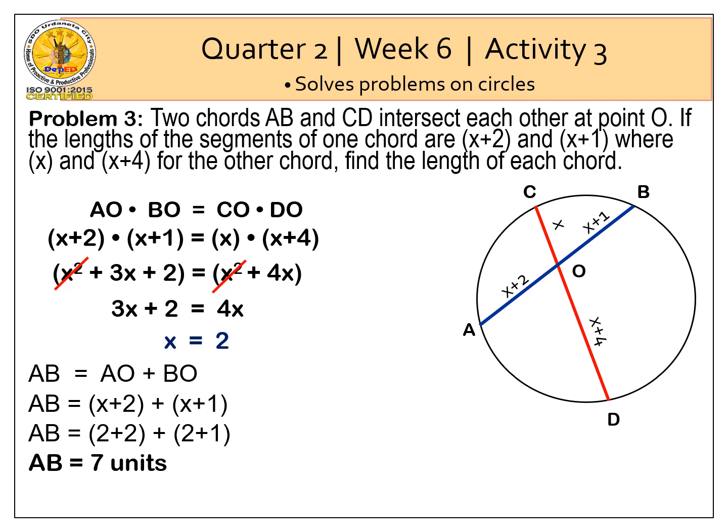Let's also have the length of line segment CD. So CD is equal to CO plus DO, where CO is equal to X and DO is equal to X plus 4. We substitute the value of X which is equal to 2. So 2 plus quantity 2 plus 4. Line segment CD is equal to 8 units.